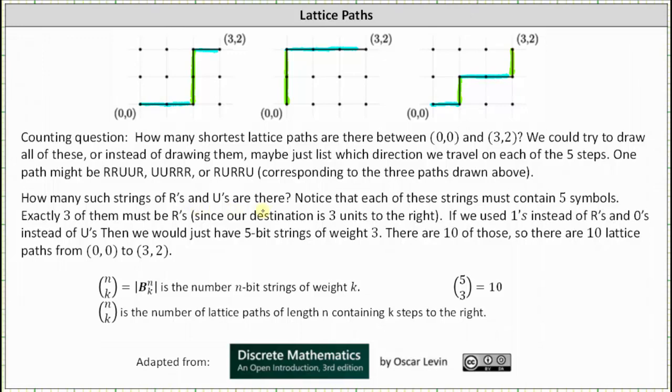How many such strings of R's and U's are there? Notice that each of these strings contain five symbols. Exactly three of them must be R's, since our destination is three units to the right. If we use ones instead of R's and zeros instead of U's, then we would just have five bit strings of weight three. We know there are 10 of those, since the number of n bit strings of weight k is equal to n choose k, and 5 choose 3 equals 10. This also indicates there are 10 lattice paths from (0,0) to (3,2).